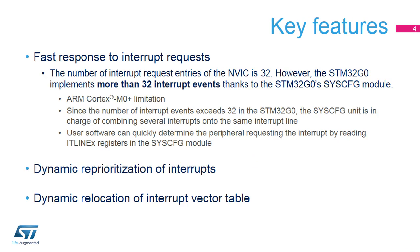The NVIC provides a fast response to interrupt requests, allowing an application to quickly serve incoming events. The ARMv6-M limits to 32 the number of interrupt request inputs of the NVIC. However, the STM32G0 implements more interrupt events than 32.